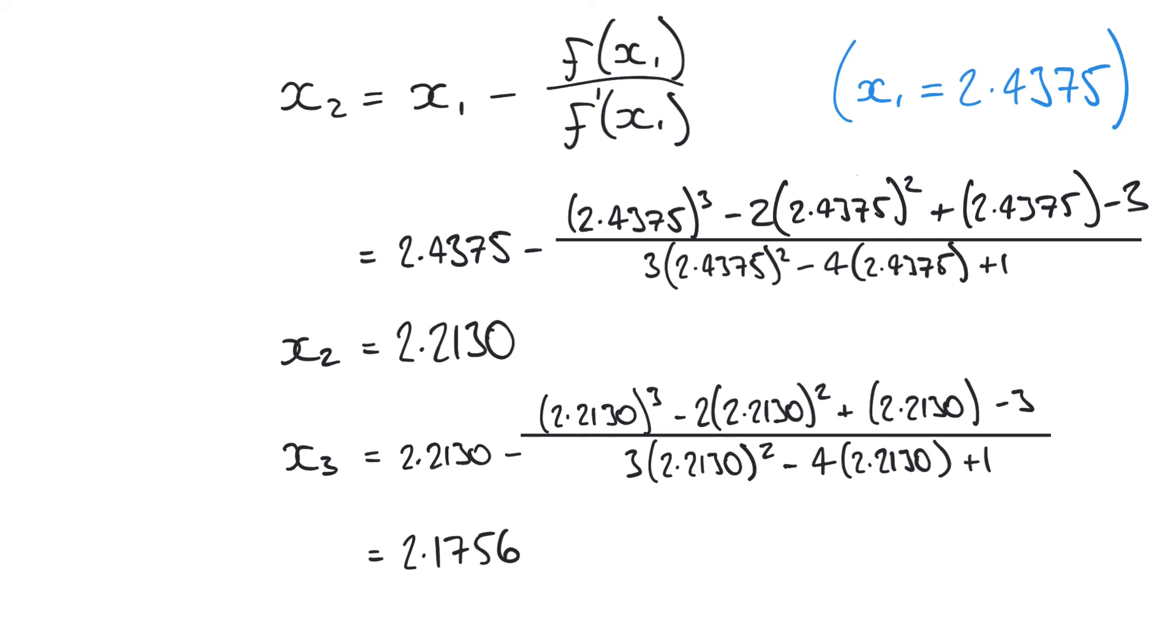I've cheated a little bit and used some computer software to solve this expression to five decimal places, and the accurate value is x = 2.17456. That would be very difficult to determine algebraically, but we see that just by using a few iterations of the Newton-Raphson method, we've actually got a value here that's very close to the precise accurate value that we've determined using a computer.